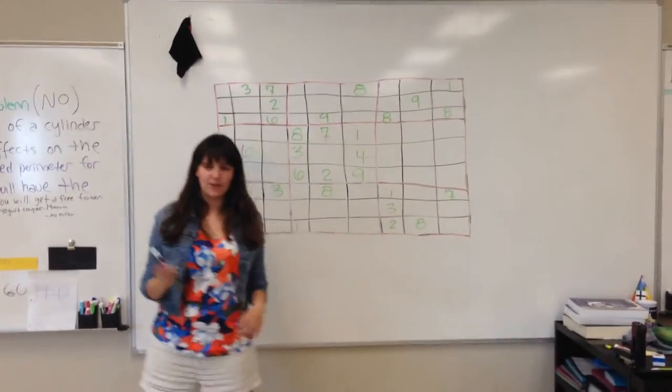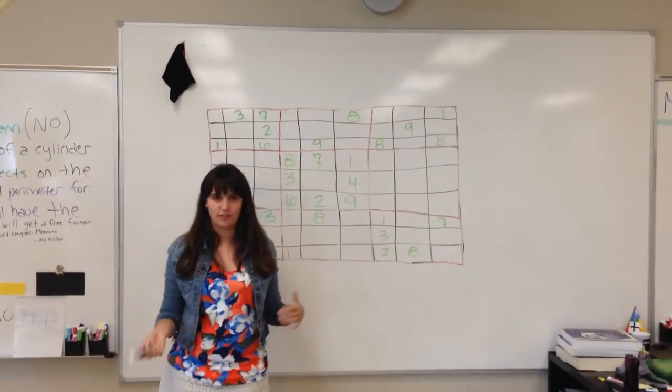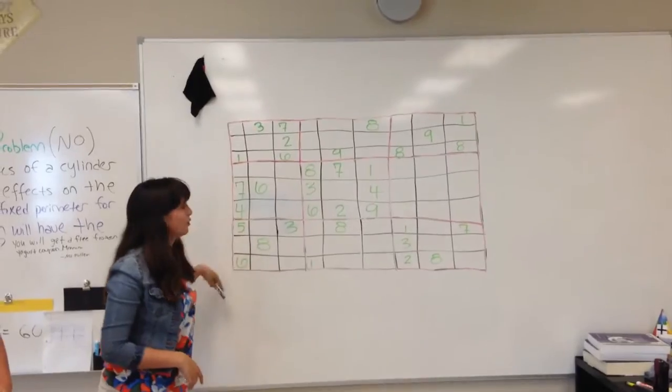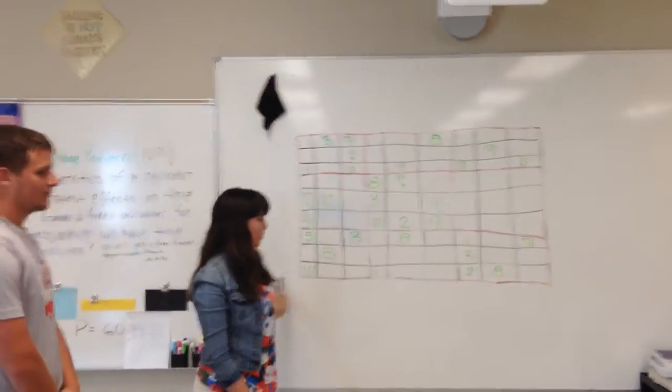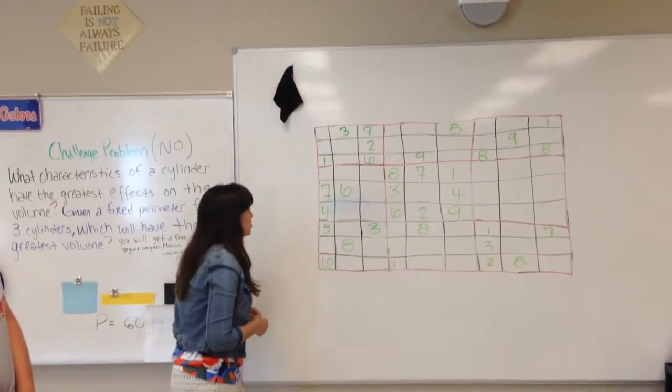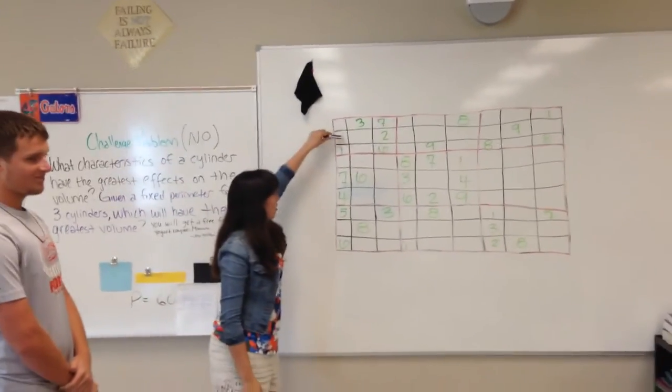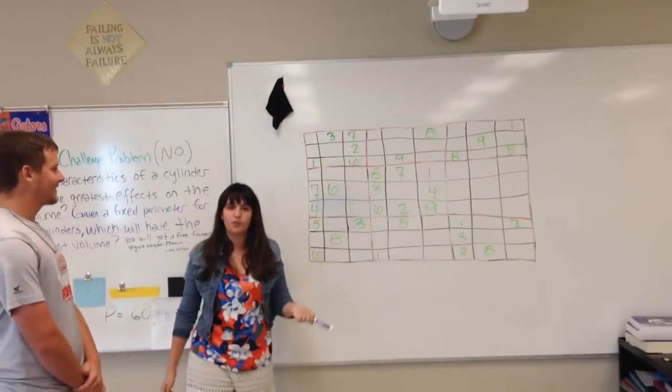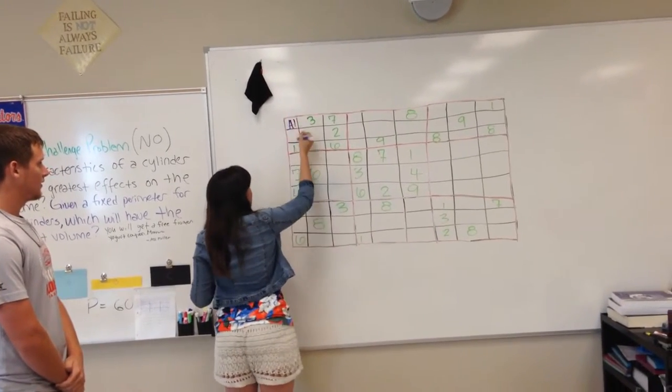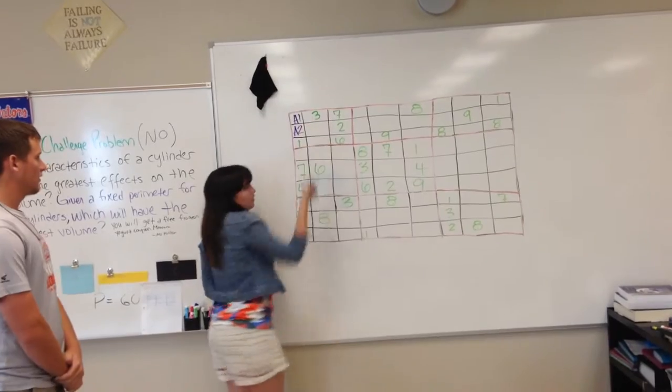So basically we're going to try and teach you how to solve a Sudoku puzzle with linear algebra. As you can see, there are 9 rows and 9 columns. In each row and column, you're not allowed to repeat the numbers, and the numbers range from 1 to 9. Each little block that's empty, you have to fill in with a variable. For example, this would be A1, this would be A2, and then you continue.